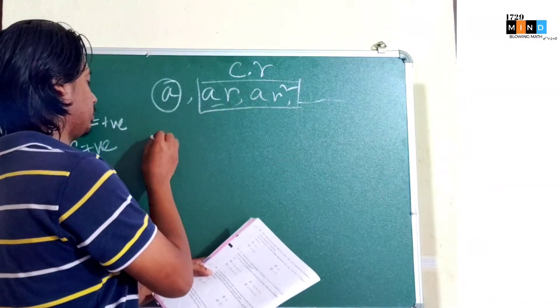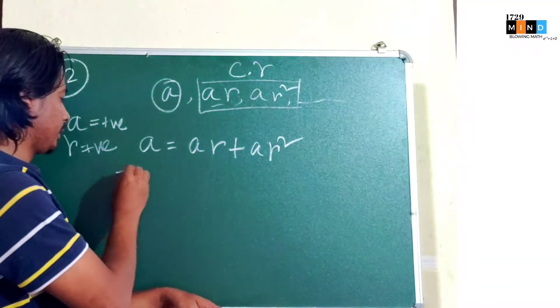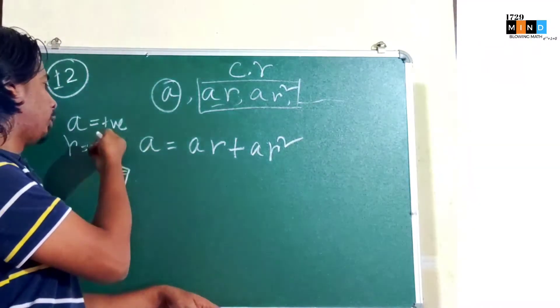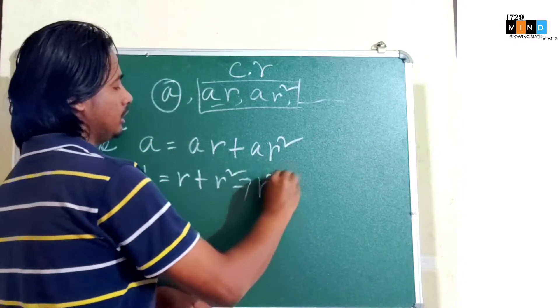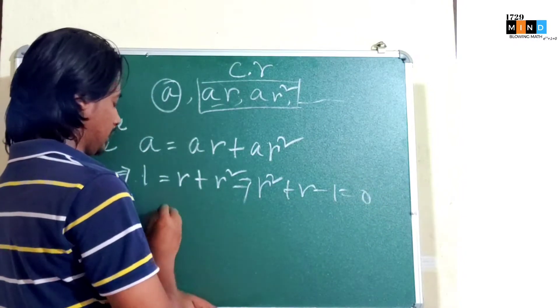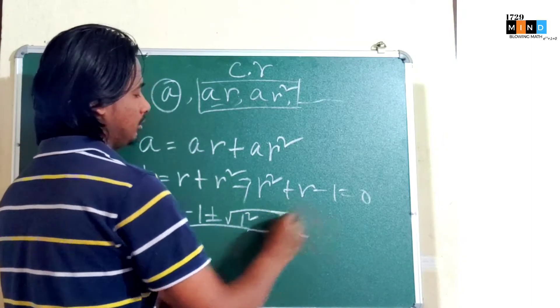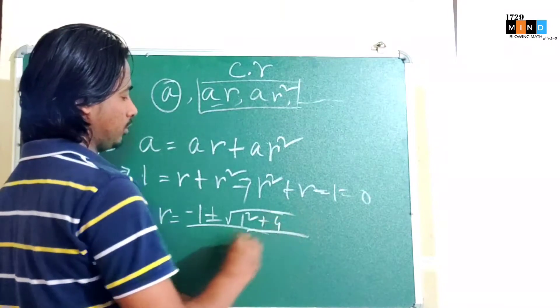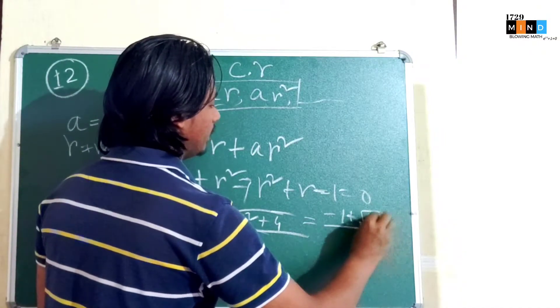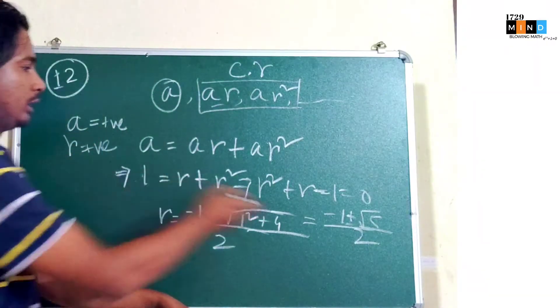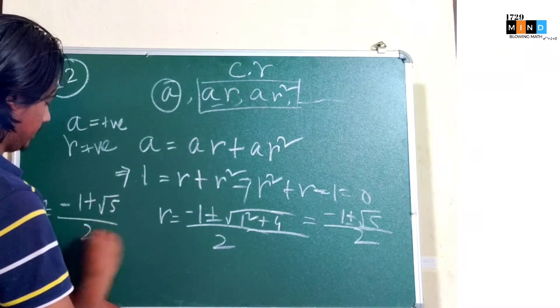A is equal to AR plus AR squared. Now A is non-zero positive, so divide the equation: 1 is equal to R plus R squared. So it's now very simple quadratic equation: R squared plus R minus 1 is equal to 0. So what is the value of R? Minus b plus minus b squared minus 4ac. C value minus 1, so this is plus 4, over divided by 2a, a value 1. So this is minus 1 plus minus root 5 by 2. Now R is positive and all terms are positive, so R is equal to minus 1 plus root 5 divided by 2.